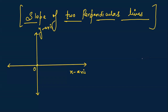Let's have a discussion about the slope of two perpendicular lines. First, you have to understand what is the meaning of slope. Slope is represented by small m, or we can say it is tan(theta), which equals the angle theta that a straight line makes with the positive x-axis.